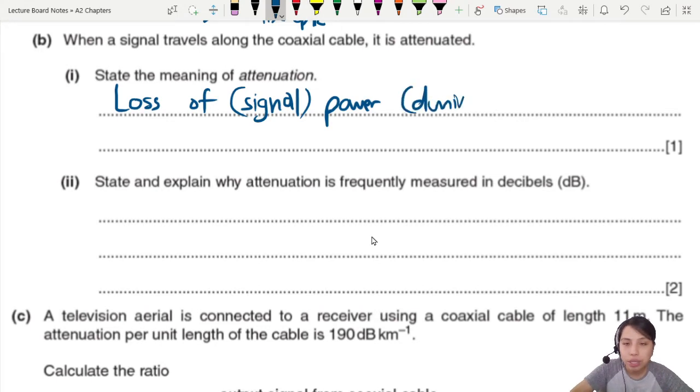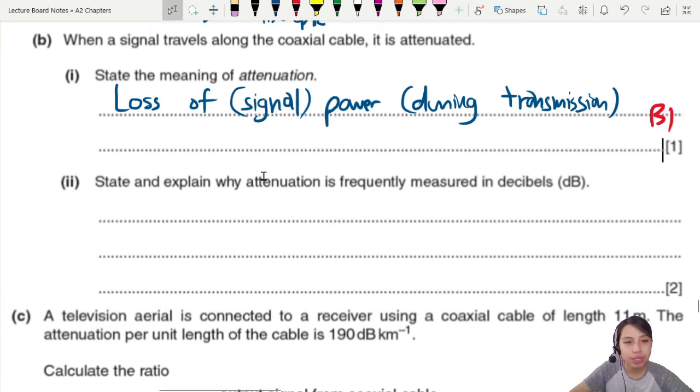State and explain why we use decibel to measure attenuation. You know why? Attenuation, we use dB. Other chapter, we don't have dB. Because it's not exactly relevant for those type of things. But in communications, yes, dB.